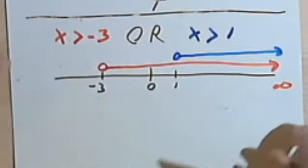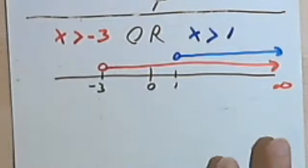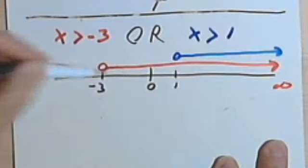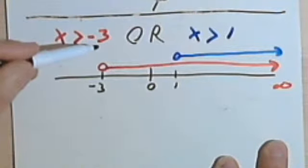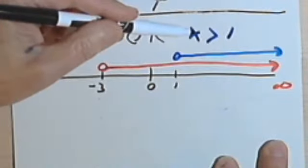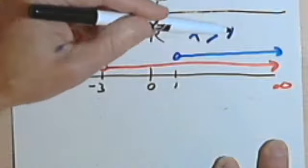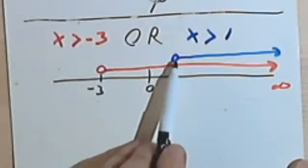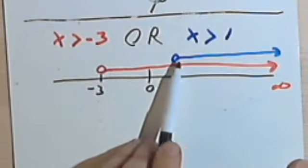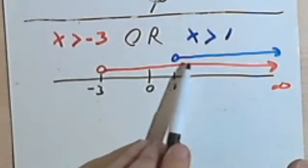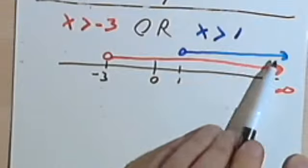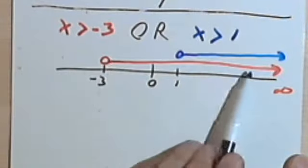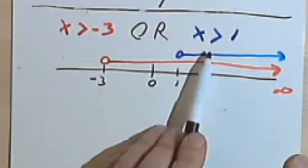Now you remember OR means that what I'm looking for is any place where I have either this first condition, the red line, x being greater than negative 3, or the second condition, the blue line, x being greater than 1. Well, I've got the x greater than negative 3 all the way through here. I've also got this area where the x is greater than 1. But if you think about it, I don't need to worry about the blue part because the red part includes everything that blue has.